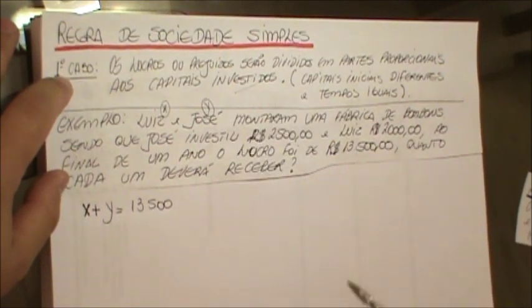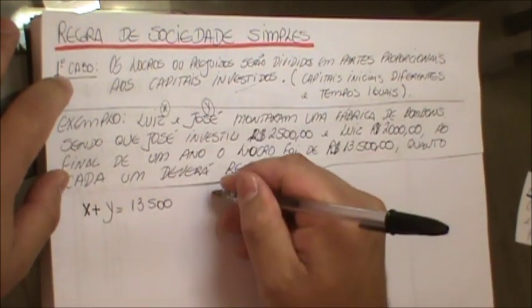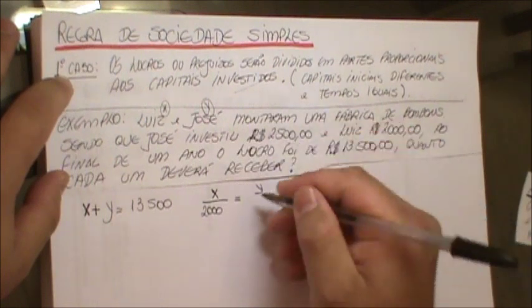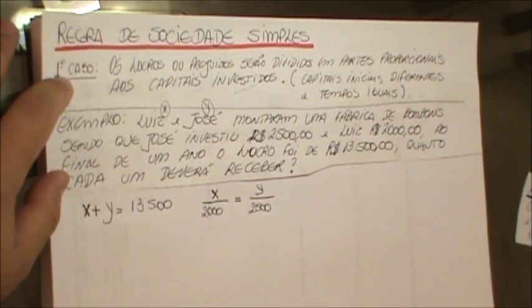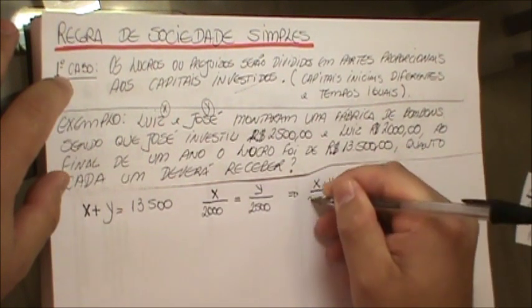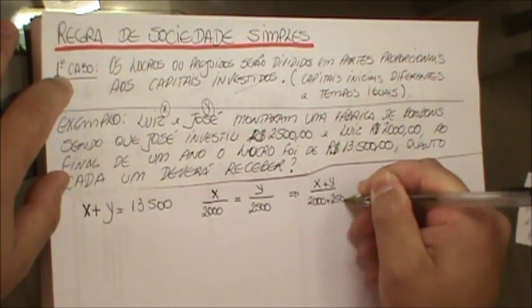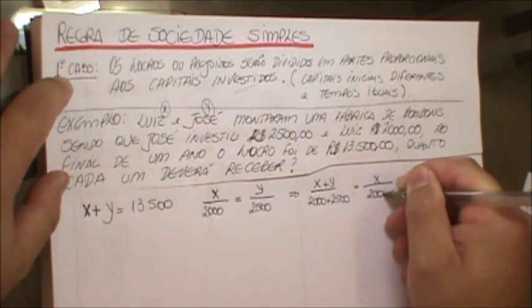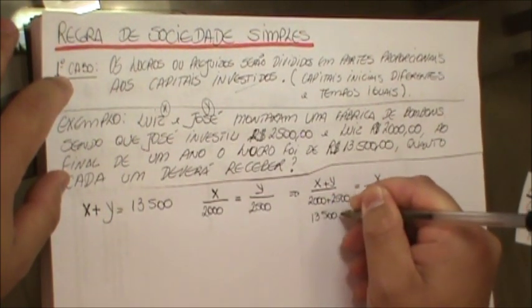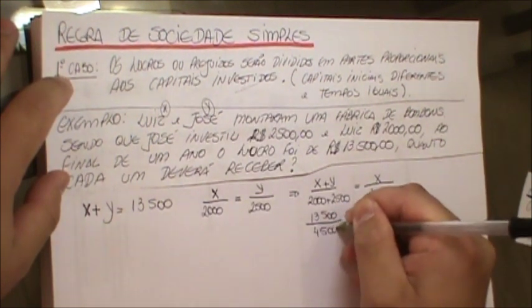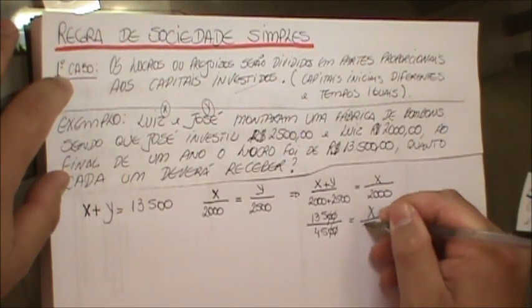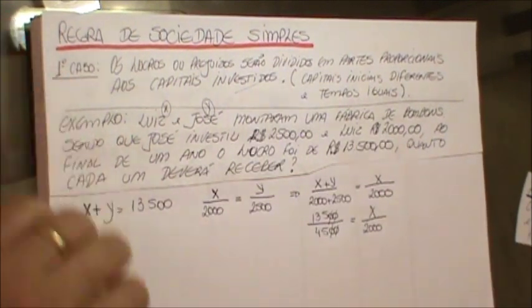Lembrando que X é o Sr. Luiz e Y é o Sr. José. O Sr. Luiz investiu R$2.000, então eu vou dizer que X está para R$2.000, assim como Y está para R$2.500. Disso aqui a gente pode já começar a resolver: X mais Y está para R$2.000 mais R$2.500, assim como X vai estar para R$2.000. X mais Y já foi informado, que é R$13.500, que vai estar para R$4.500. Dá para simplificar por 100 aqui para facilitar a conta, e X está para R$2.000.